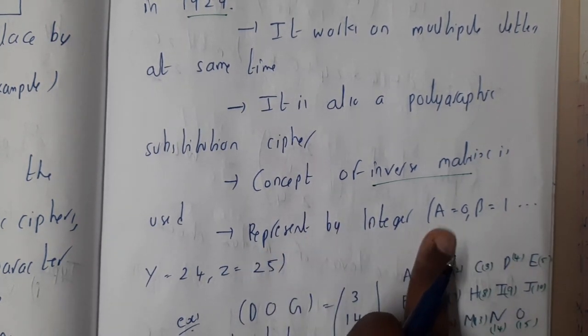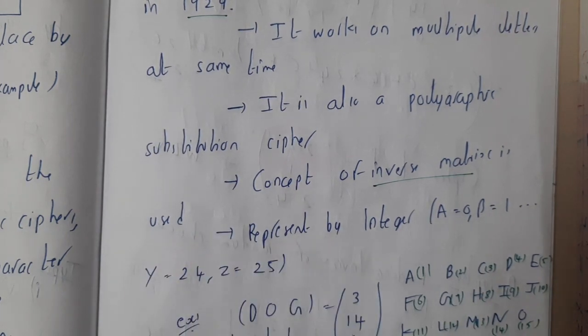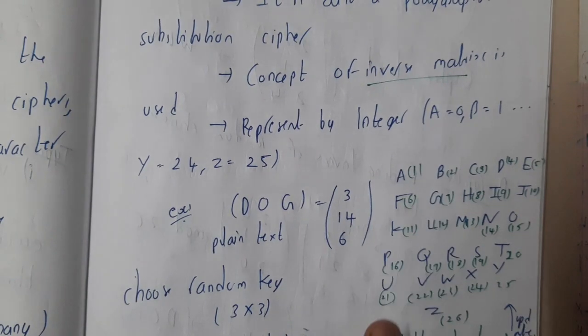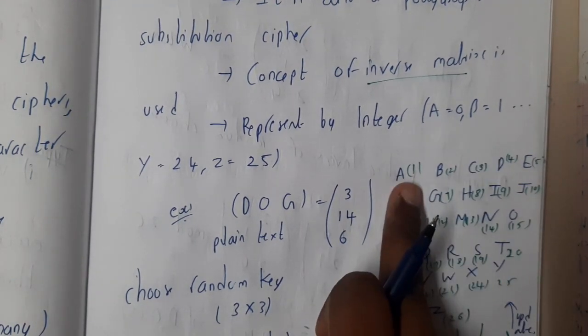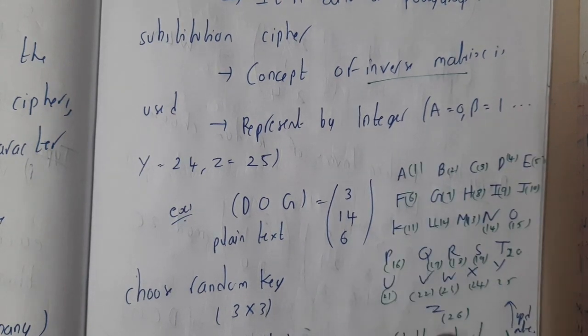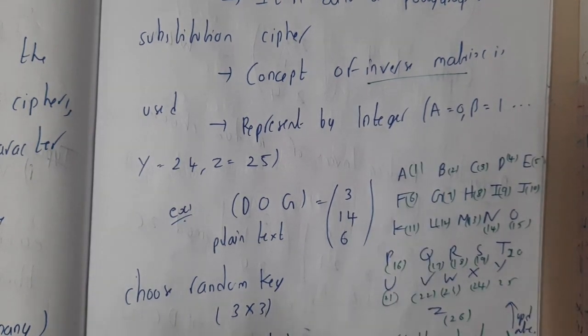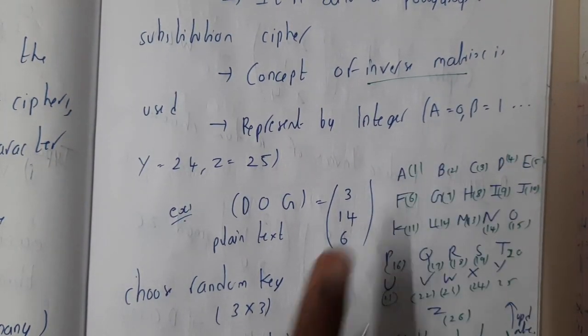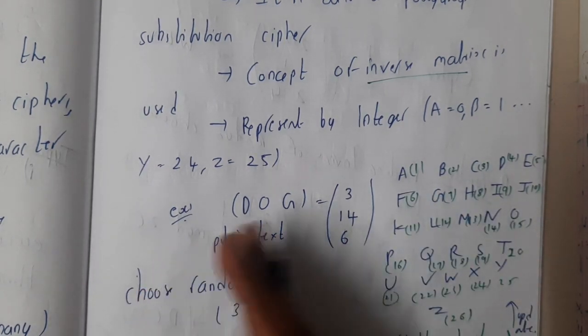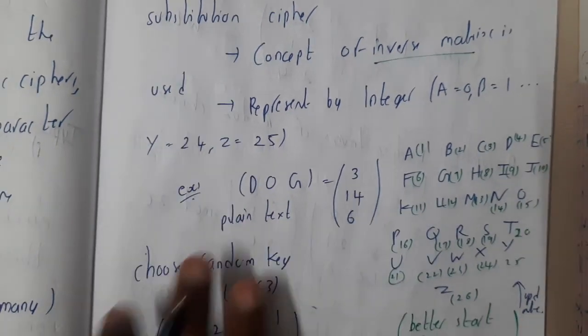We will be representing the letters A to Z with their respective numbers. We should start from zero, but unfortunately while writing I forgot it and I started from one. Please, while you are practicing, start from zero to 25 because I did a mistake. I don't want you to do a mistake. It should start from zero, as in our programming language how we start index from zero.